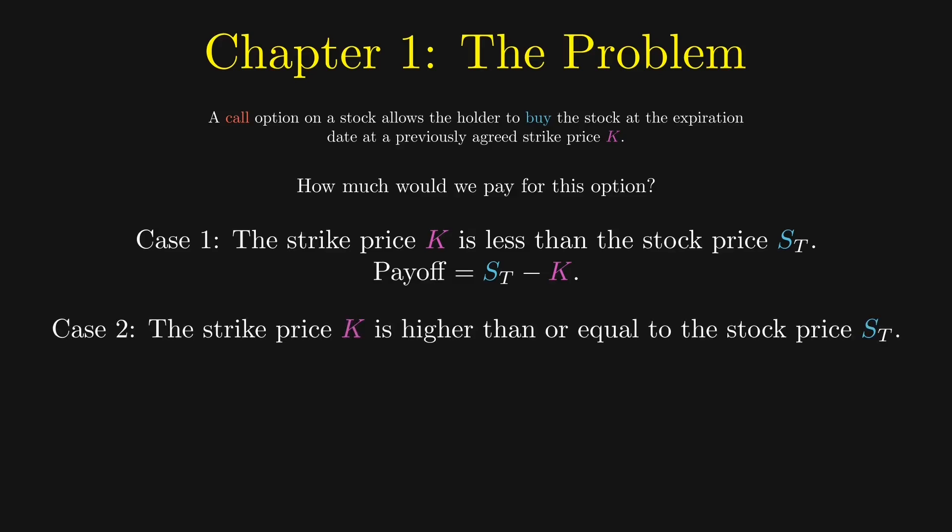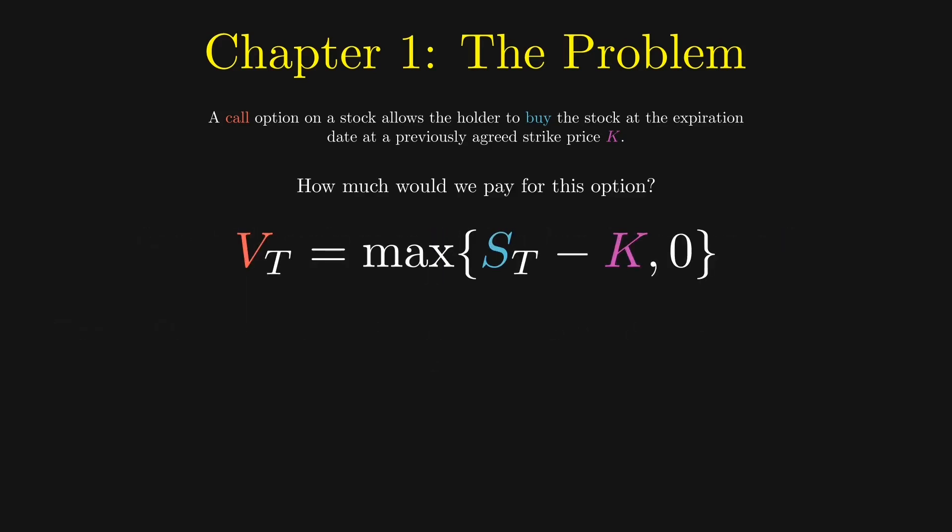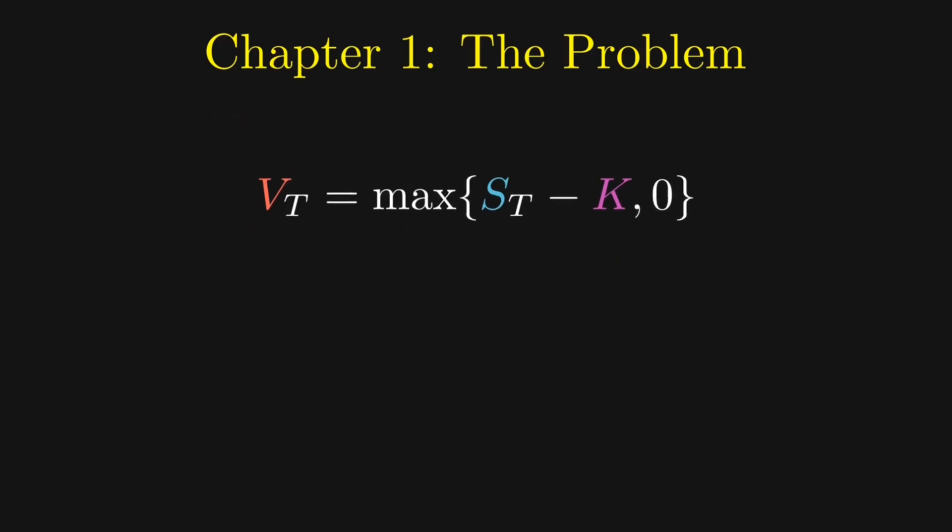If the strike price K is higher than or equal to the stock price S_T, we will just give up the option and let the contract expire worthless. The payoff is zero. Notice that in both cases, we will not lose money. Our payoff is the maximum of the two scenarios.